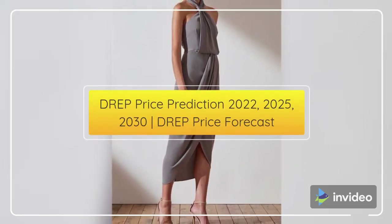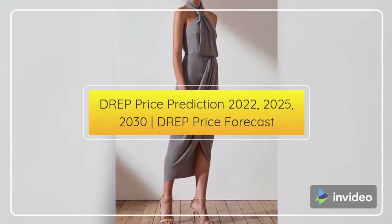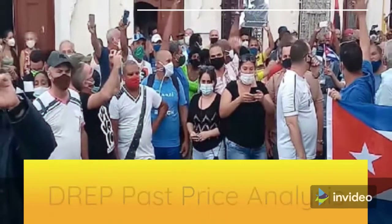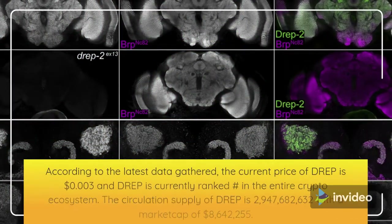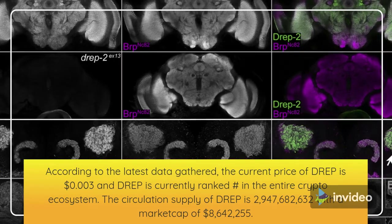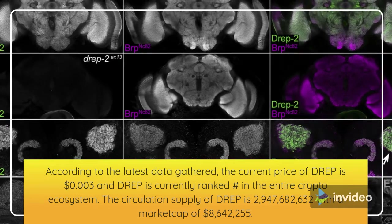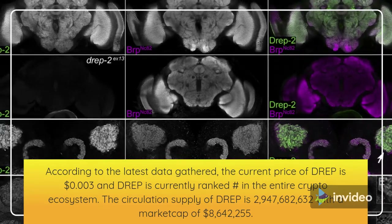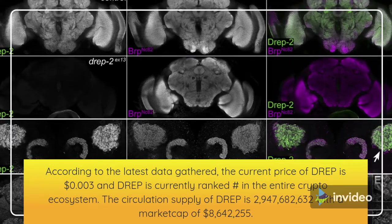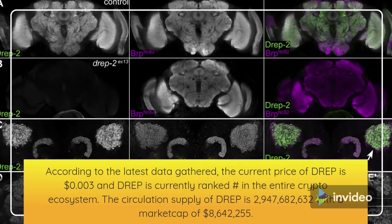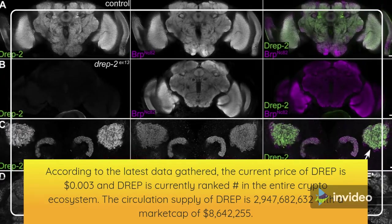DREP Price Prediction 2022 to 2025 to 2030 — DREP Price Forecast. According to the latest data gathered, the current price of DREP is $0.003 and DREP is currently ranked in the entire crypto ecosystem. The circulation supply of DREP is 3,332 with a market cap of $8,642,255.